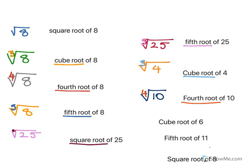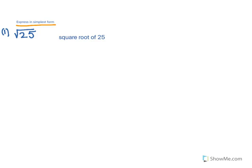Now, how would you write cube root of 6? We have cube root, so it will be cube root of 6. The next is fifth root of 11, so fifth root of 11. And here we have square root of 8, so square root of 8.